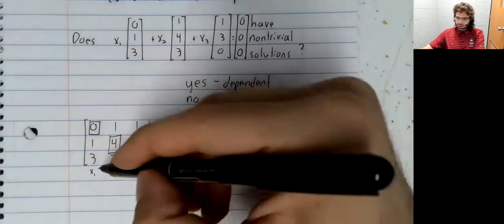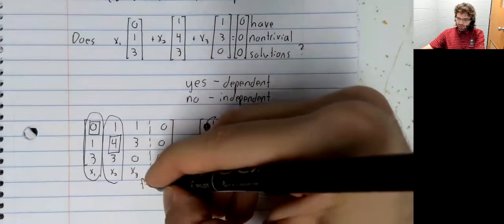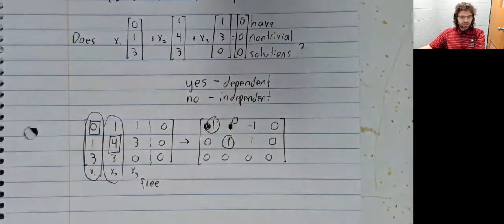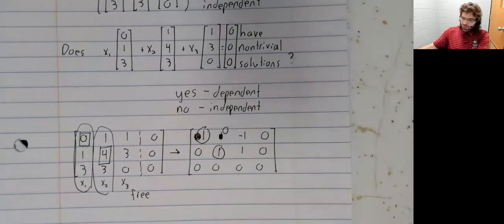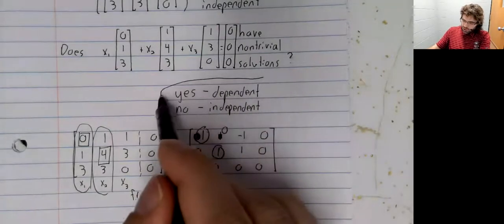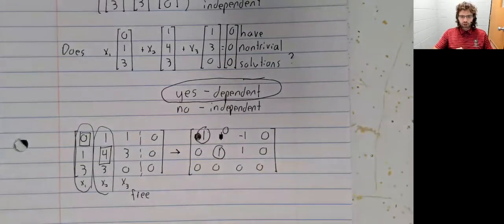X1 is basic, X2 is basic, and X3 is free, meaning that there are infinitely many solutions. If there are infinitely many solutions, then you must have non-trivial solutions. And the answer to this question is that this set of vectors is dependent.